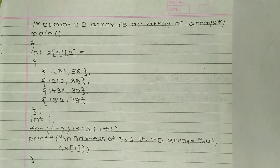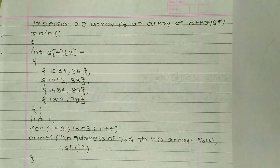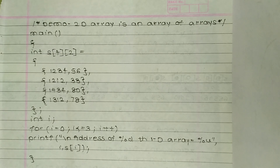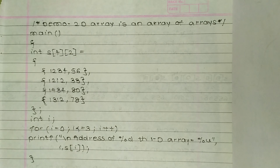This is a demo program of a 2D array. A 2D array is an array of arrays. We declare int s[4][2], so s is a two-dimensional array with four elements in the first dimension and two in the second. It is initialized with four sets of pairs: {1,2,3,4}, {5,6} as the first element; {1,2,1,2,3,3} as the second; {1,4,3,4,80} as the third; and {1,3,1,2,7,10} as the fourth.